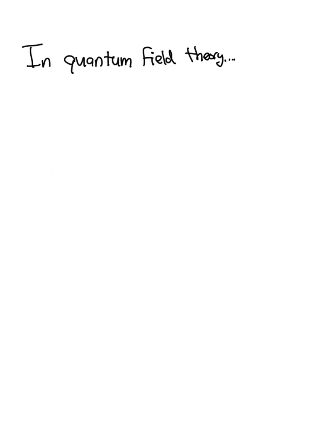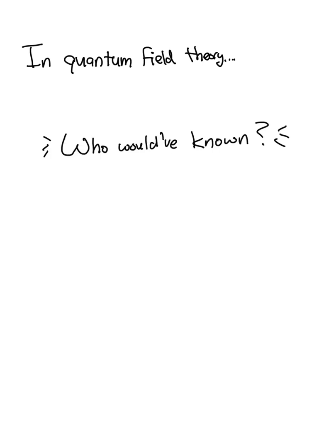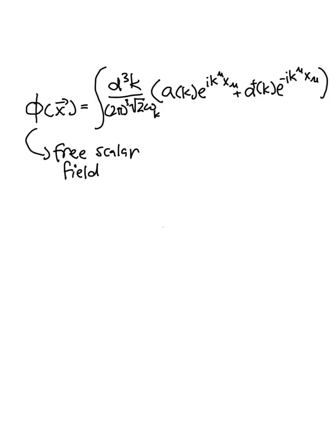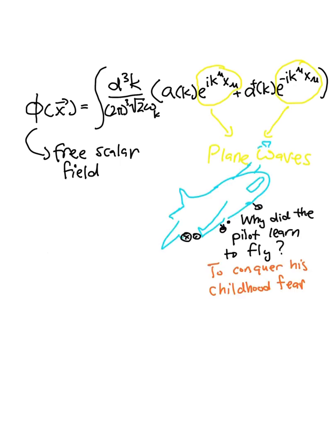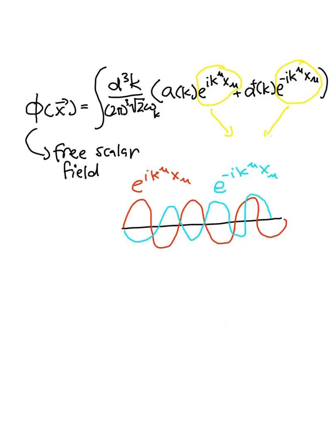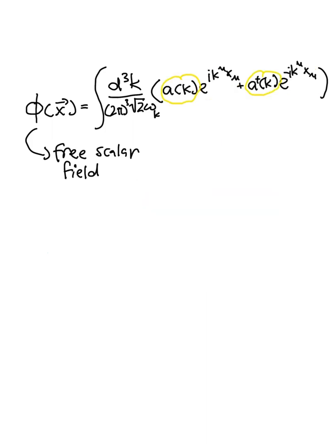So we know that in quantum field theory, there are these special things called quantum fields. Here's the formula for a free scalar field. We see that the field is the superposition of plane waves. Plane waves are just sinusoidal functions. The other reason why the quantum field is a wave. The coefficients in front of the plane waves just tells us how much of the plane waves make up our entire field.